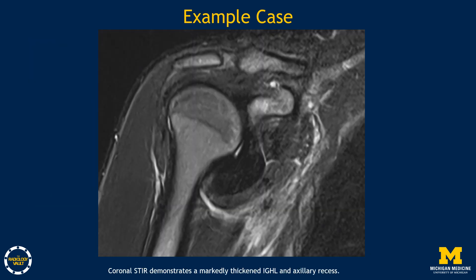Here is an example case of marked thickening of the inferior glenohumeral ligament and axillary recess. This particular case is significantly profound, and in most cases you will not see the IGHL be this thickened. It is important to note that you don't need to have the constellation of thickening, edema, and indistinctness — any one of these signs can be present with adhesive capsulitis. The signal and morphologic changes in the inferior glenohumeral ligament and axillary recess has been shown to be the most specific sign for adhesive capsulitis on MRI.